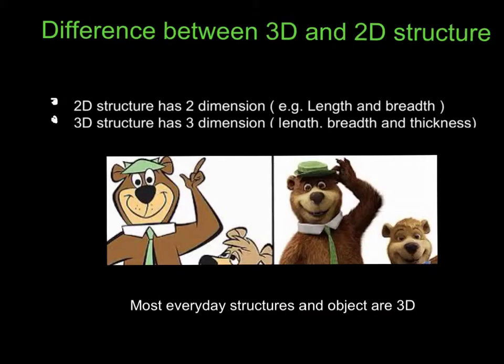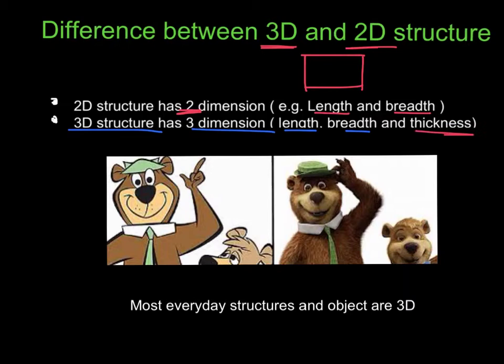Just to sum up the difference between 2D and 3D structures: 2D structures only have two dimensions - 2D means two dimensions. For example, if it's a rectangle, it would have length and breadth, that's all it has. Whereas a 3D structure has three dimensions - it would have length and breadth just like 2D, but on top of that, it also has that thickness.